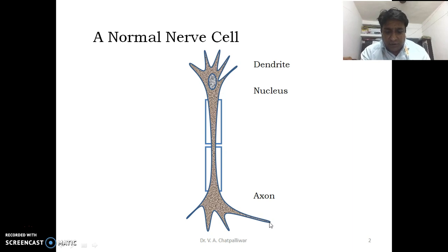This axon forms junctions that are connections with another neuron. It connects with dendrites or it also forms connections with muscle cell. Those muscle cells are called as effector organs.